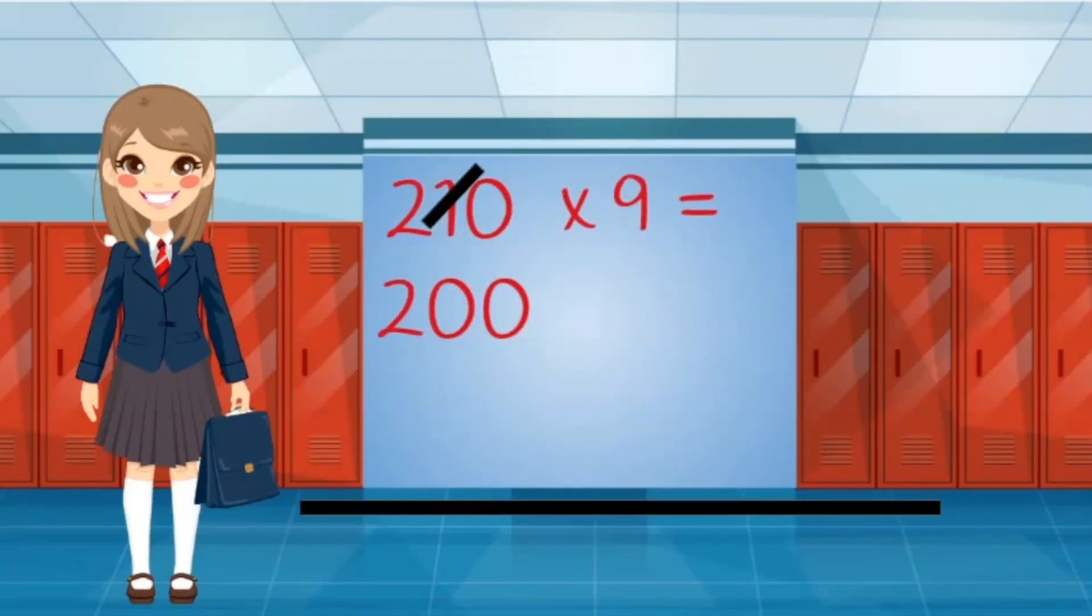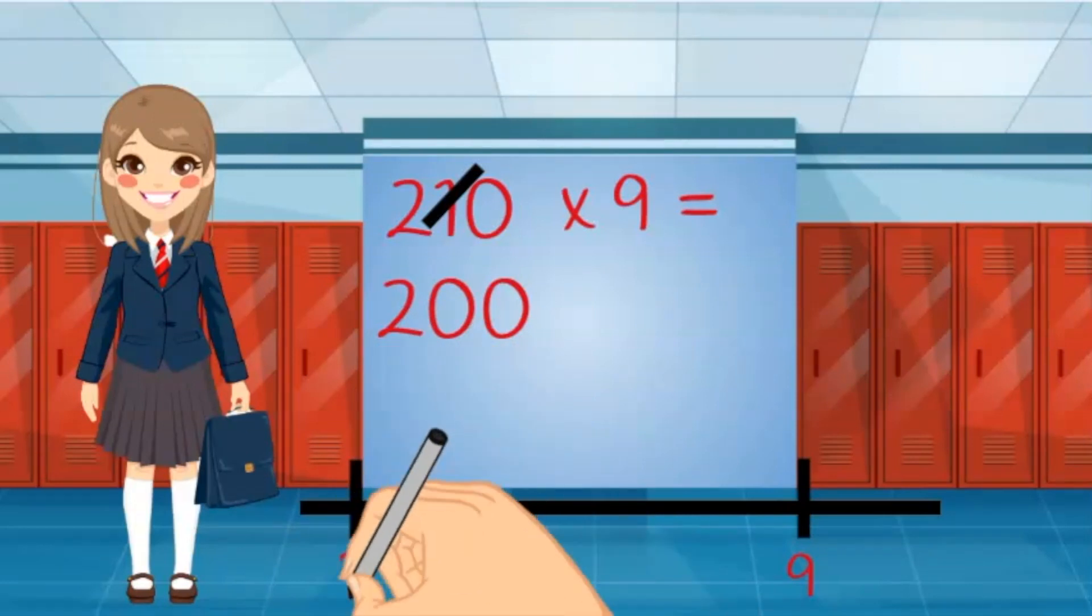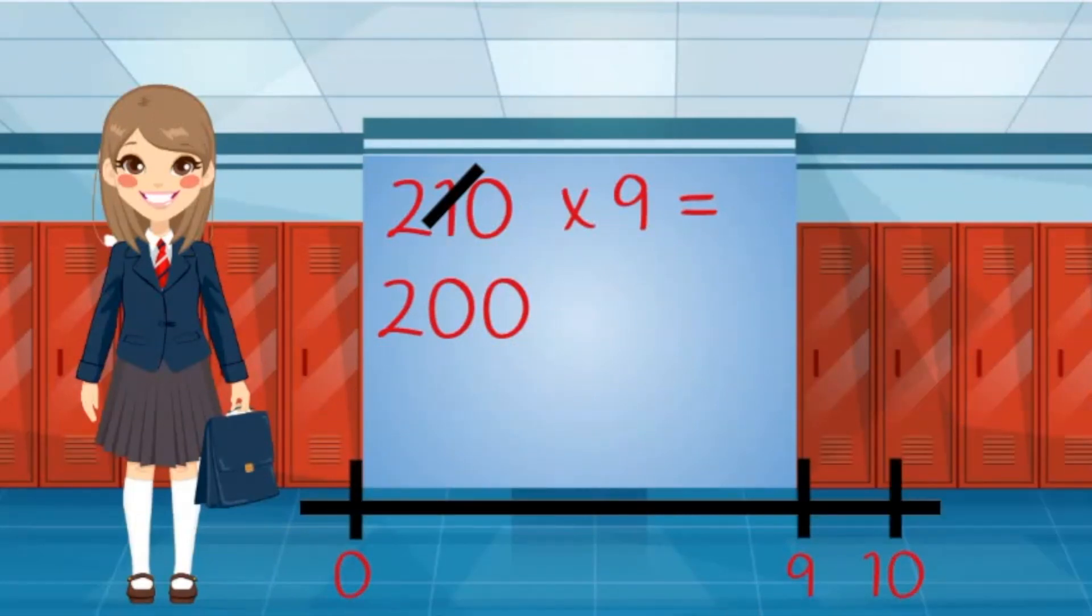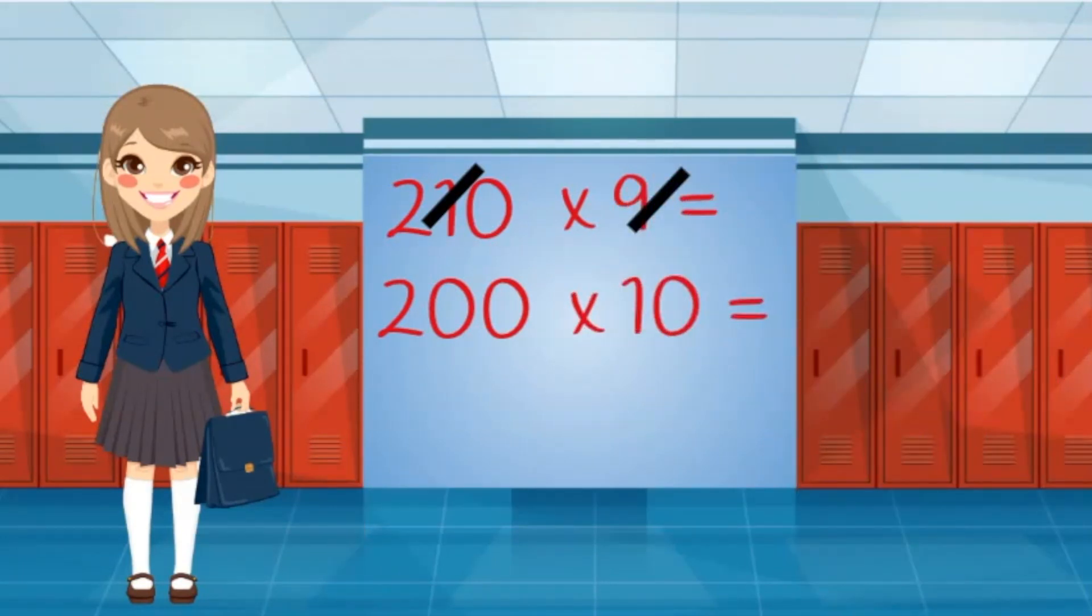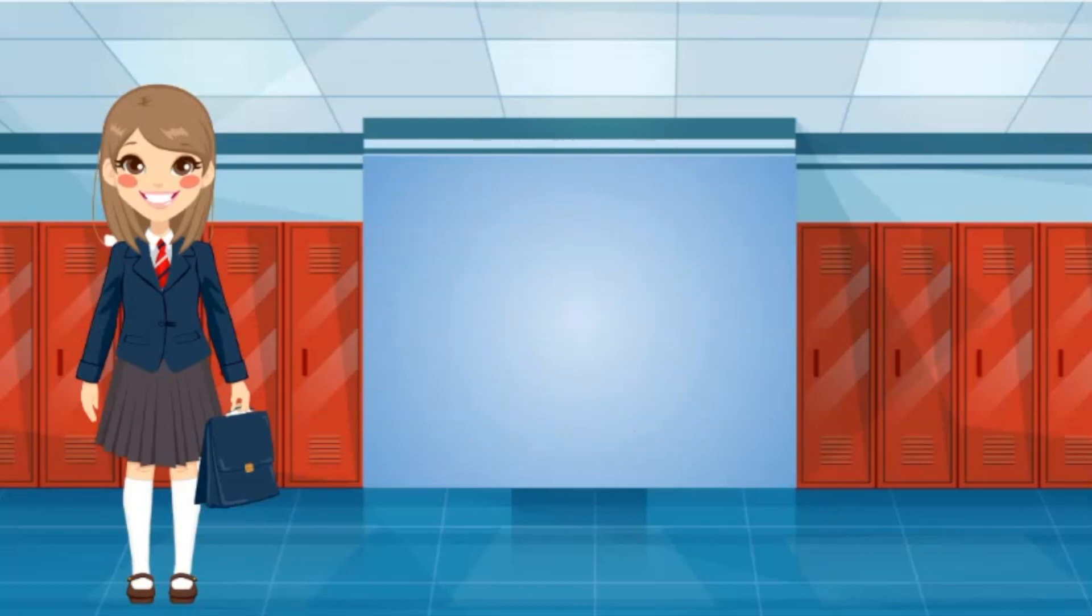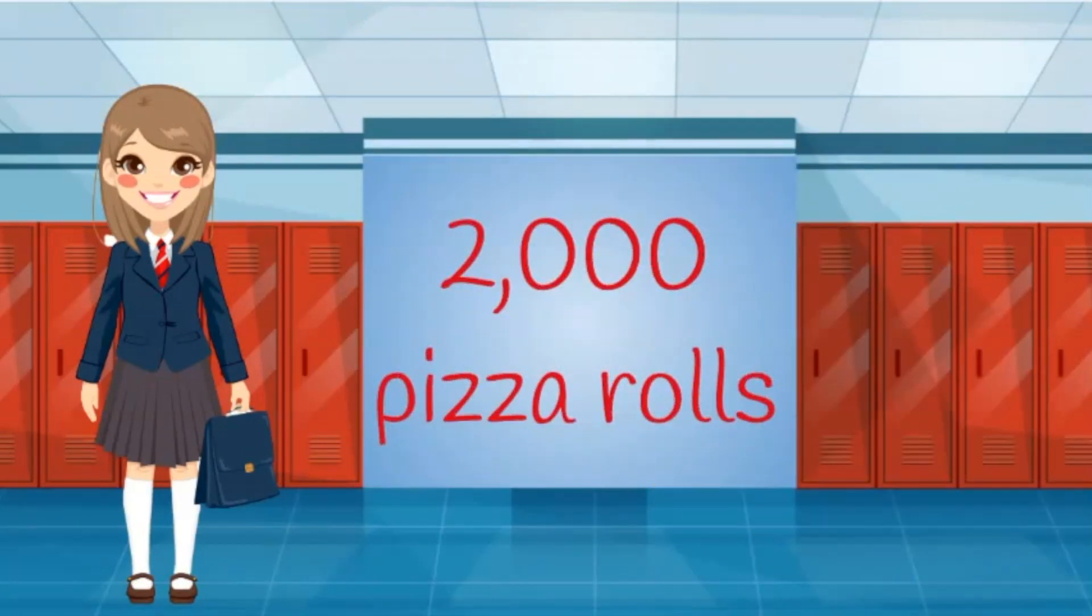To estimate, I will multiply 200 times 10. I'll ignore the zeros for now. 2 times 1 equals 2. I need to add back the three zeros from the numbers—that makes 2,000. Wow, 2,000 pizza rolls! I better go to the store.